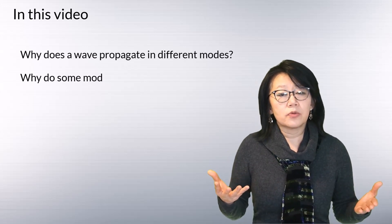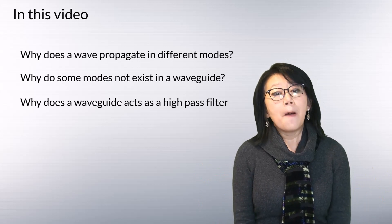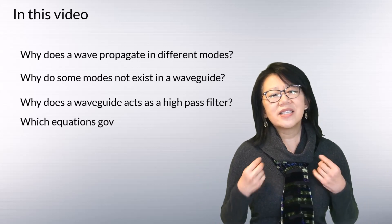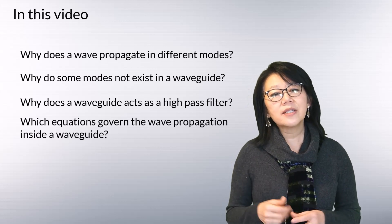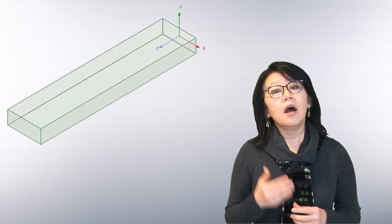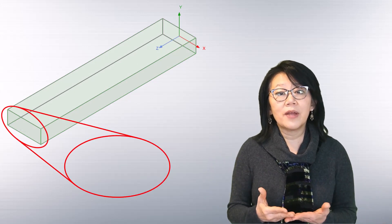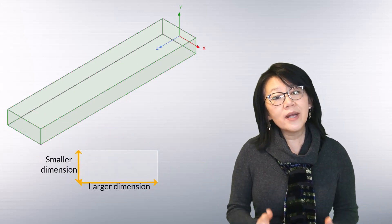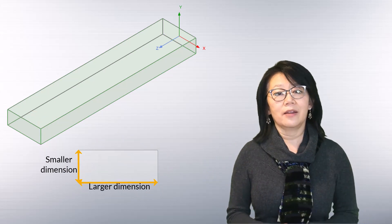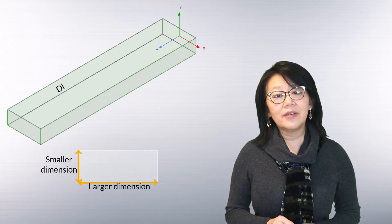In this video module we're going to discuss how and why a wave propagates in different modes inside a rectangular waveguide by discussing and detailing the governing equations. We'll start the discussion with the geometry of the rectangular waveguide — as the name suggests, the cross-section of the waveguide cavity is a rectangular shape with one dimension always greater than the other.